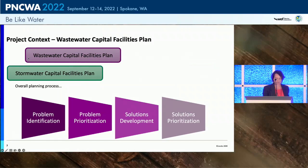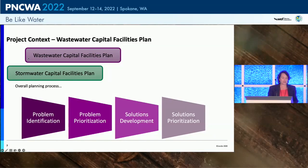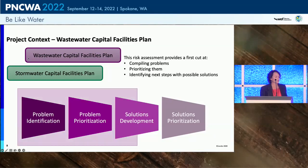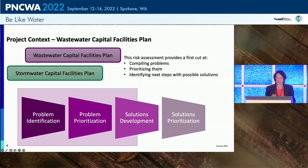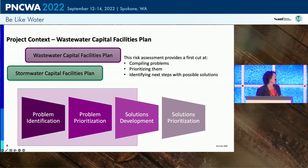We needed to look at them holistically. This is a broad overview of capital facility planning — you identify your problems, prioritize those problems, develop solutions, and then organize those solutions. The risk assessment itself takes a first look at compiling problems, prioritizing them, and identifying the next steps and possible solutions. EPA actually required the City of Spokane to do a risk and resiliency assessment for water. We were absolutely floored that the same requirement wasn't required for wastewater and stormwater, so we decided it would be a best management practice to implement this project for wastewater and stormwater.